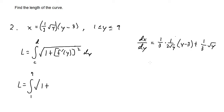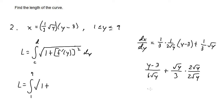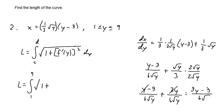Simplifying, we have (y minus 3) over (6 times the square root of y), plus the square root of y over 3. To combine these fractions, the common denominator is 6 times the square root of y. Multiplying the second fraction's numerator and denominator by 2 times the square root of y gives (y minus 3) over (6 root y), plus 2y over (6 root y). Adding gives (3y minus 3) over (6 root y). Factoring out 3 gives y minus 1 over (2 times the square root of y).